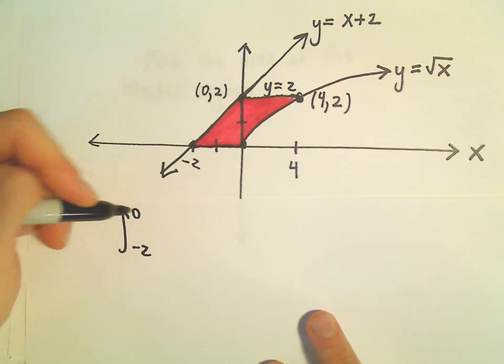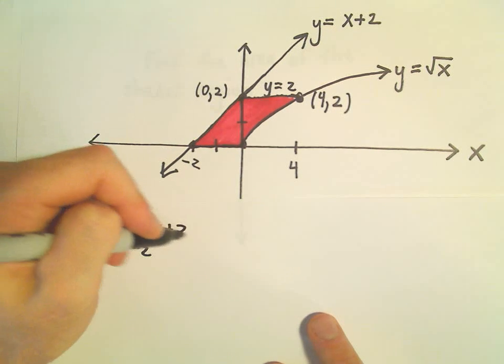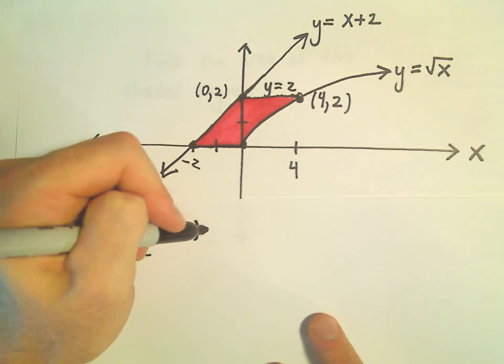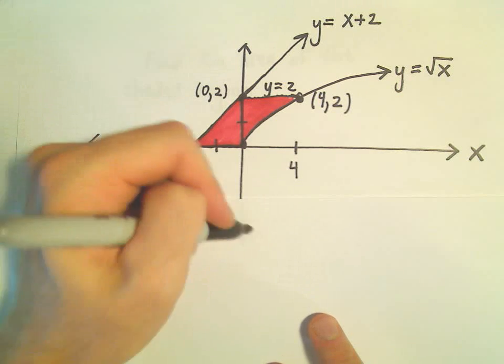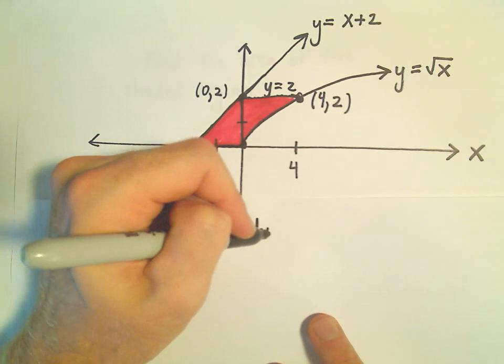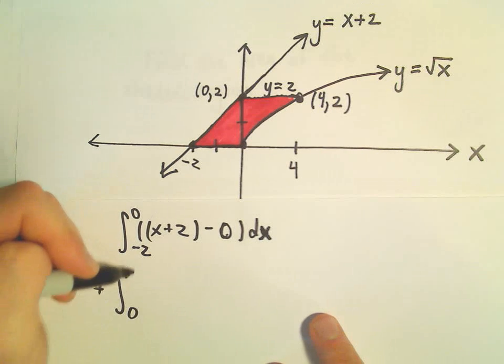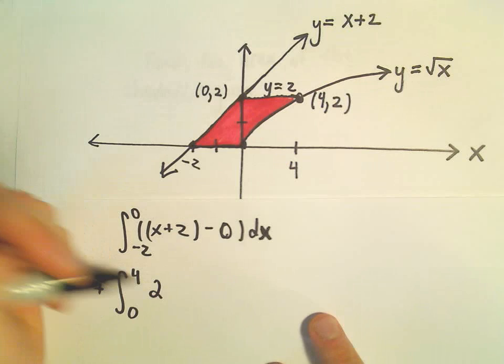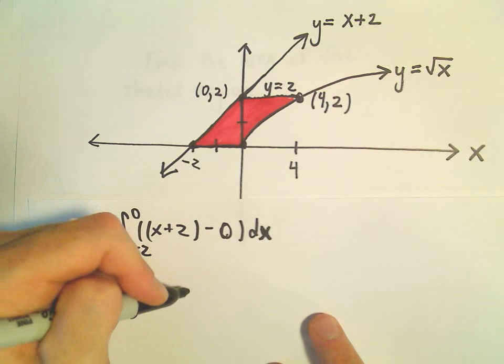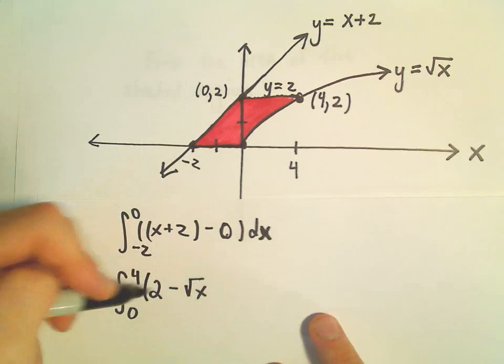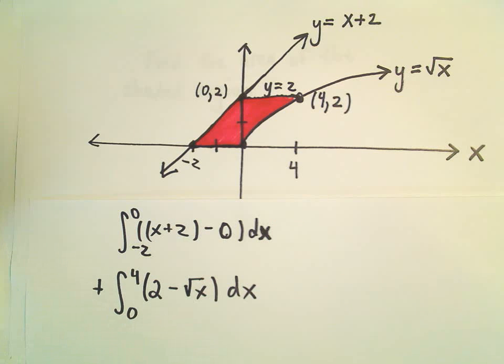So we could do this again in two pieces. Let's write it down. So negative 2 to 0, the function on top is x plus 2. The bottom one would just be y equals 0. So all of that dx. And then we would add to that the integral from 0 to 4. The function on top is y equals 2 minus the function on the bottom would be square root of x. And then we could add those together, and it wouldn't be the end of the world to compute it that way.